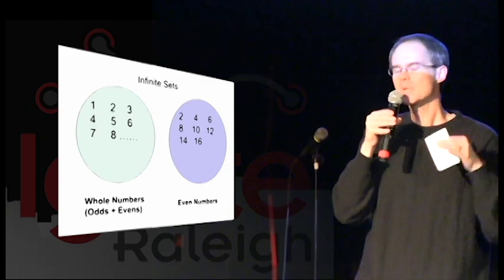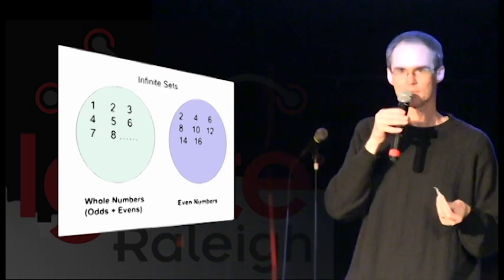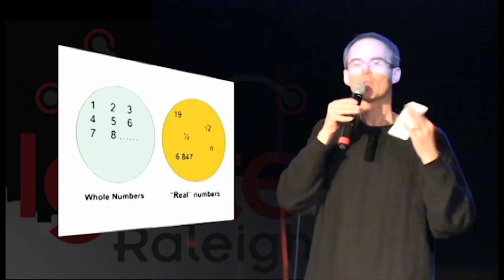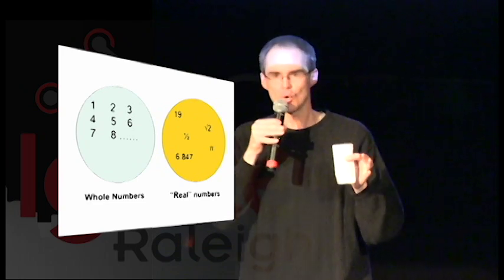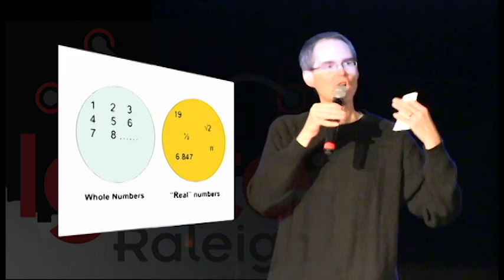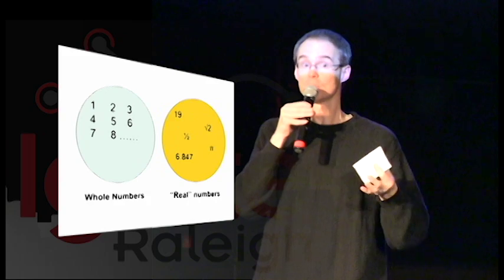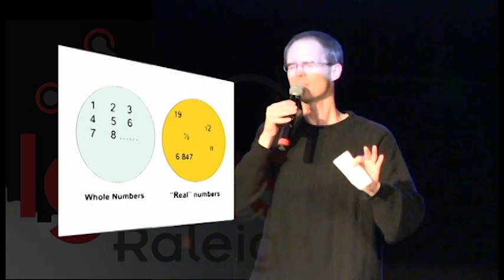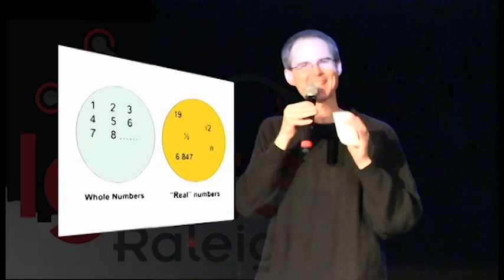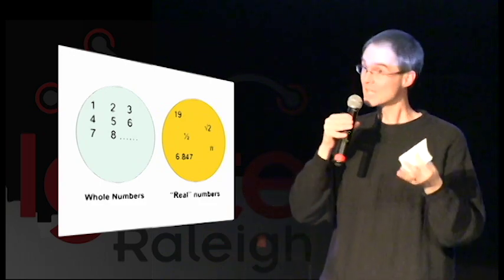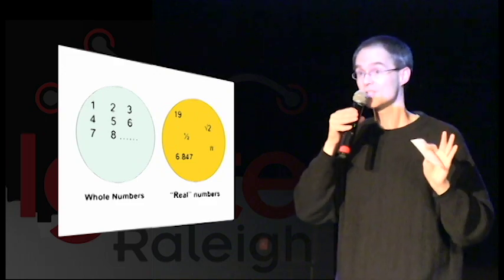And Cantor said, no, that's not quite it, because he was actually looking for other sets that might be a different size. And he found one: the set of all of the real numbers. The set of all the real numbers is like all of the whole numbers plus some other numbers like fractions, the square root of two, and pi. And Cantor was actually able to show that the set of all of the real numbers was actually larger than the set of all of the whole numbers. This is where the math people — his math friends — really started getting freaked out. They said, wait a minute. So what you're saying is we've got an infinite set of real numbers and an infinite set of whole numbers, but the infinite set of real numbers is somehow more infinite than the set of all the whole numbers? And Cantor said, yes, that is exactly right.